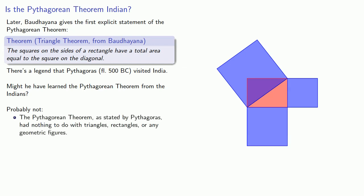First, the Pythagorean theorem, as stated by Pythagoras, had nothing to do with triangles, rectangles, or any geometric figures. It was purely a relationship among whole numbers. Second, even if Pythagoras visited India, which itself is unlikely, all of Mesopotamia is between Greece and India. Remember, the Mesopotamians knew the Pythagorean theorem as early as 1800 BC. So, Pythagoras didn't have to go all the way to India to learn about the relationship. He could have learned it in Mesopotamia.